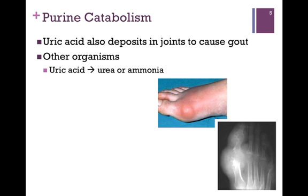In addition to accumulating in the kidneys, uric acid can also deposit in joints, and this is the cause of gout. In the lower right we have an x-ray of a person suffering from gout, showing how it has altered the formation of the joint. On the external part of the foot you can see the redness associated with inflammation, no doubt causing much pain. Other organisms are able to further catabolize uric acid to form urea or ammonia; however, we as mammals do not have these processes.